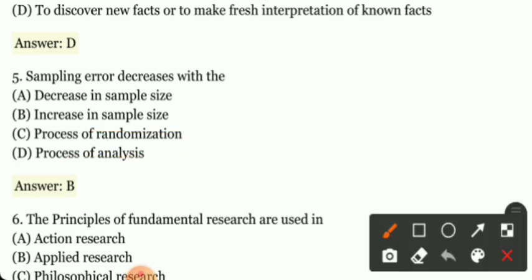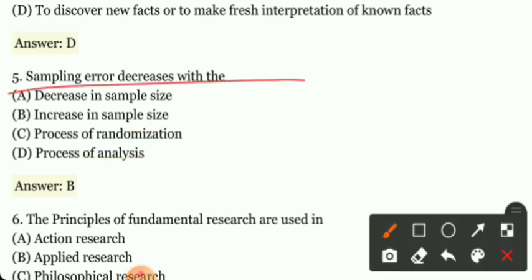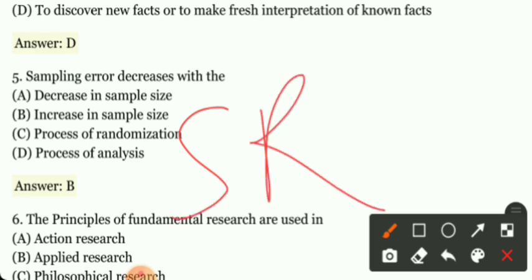A) Decrease in sample size, B) Increase in sample size, C) Process of randomization, D) Process of analysis. So sampling error decreases with what? Increase in sample size. Sampling error will decrease when sample size increases. This is a very important question, see this very carefully.